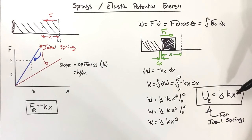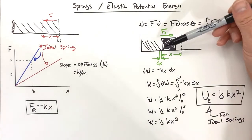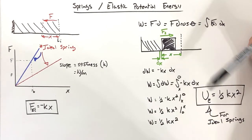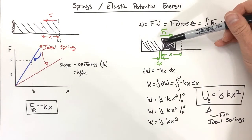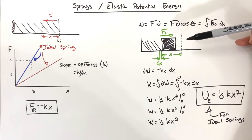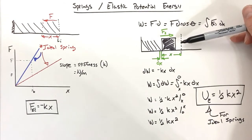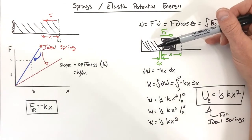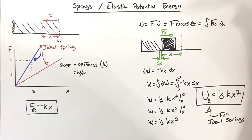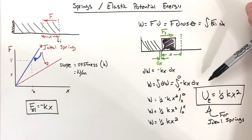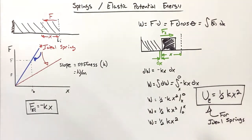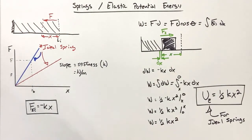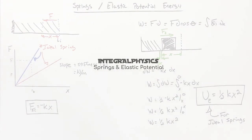This equation, ½kx², is the energy stored in a spring when we compress it — the energy that could be released if we let the spring relax, and also the energy required to compress the spring in the first place. This becomes a very useful equation going forward. That's all for now.